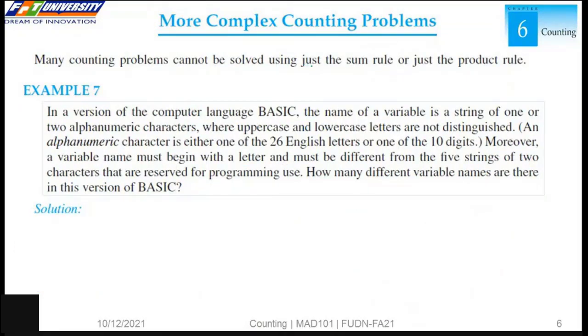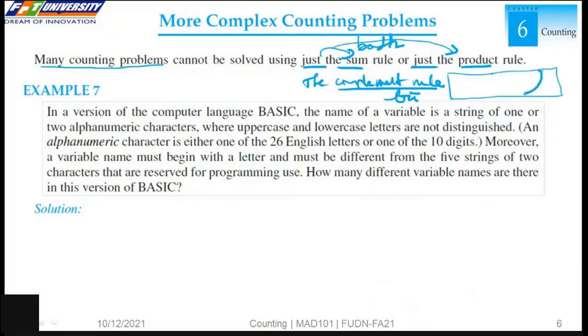If we use just the sum or just the product, we cannot solve many counting problems. We can use the complement rule. If we want to count how many elements are here, and we know the number of elements of S, we just count the complement. For example, 1, 2, 3. The number of elements of S, for example, is 20. The result here is 20 minus 3 equals 17.